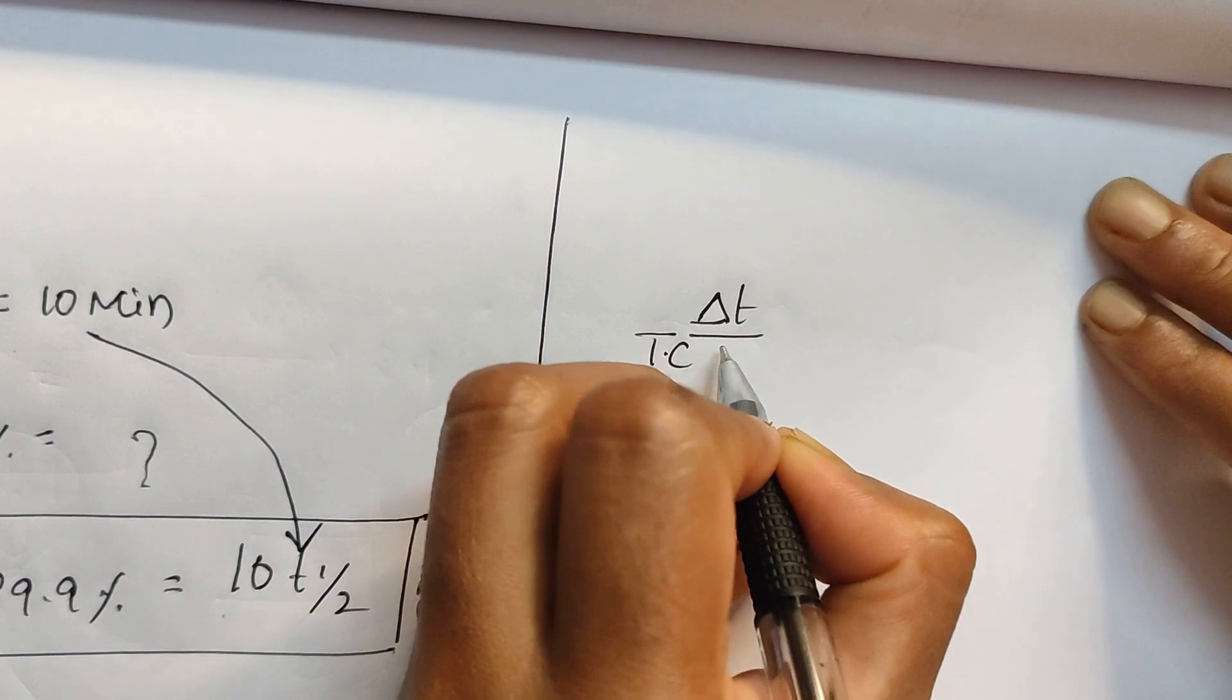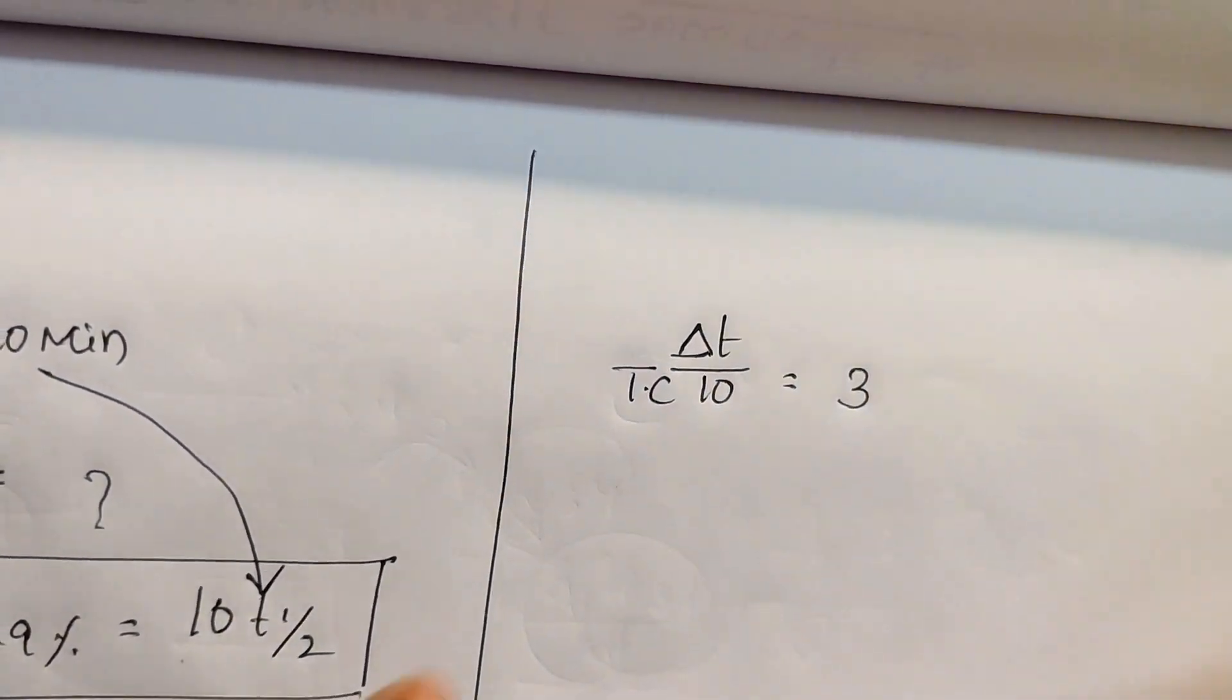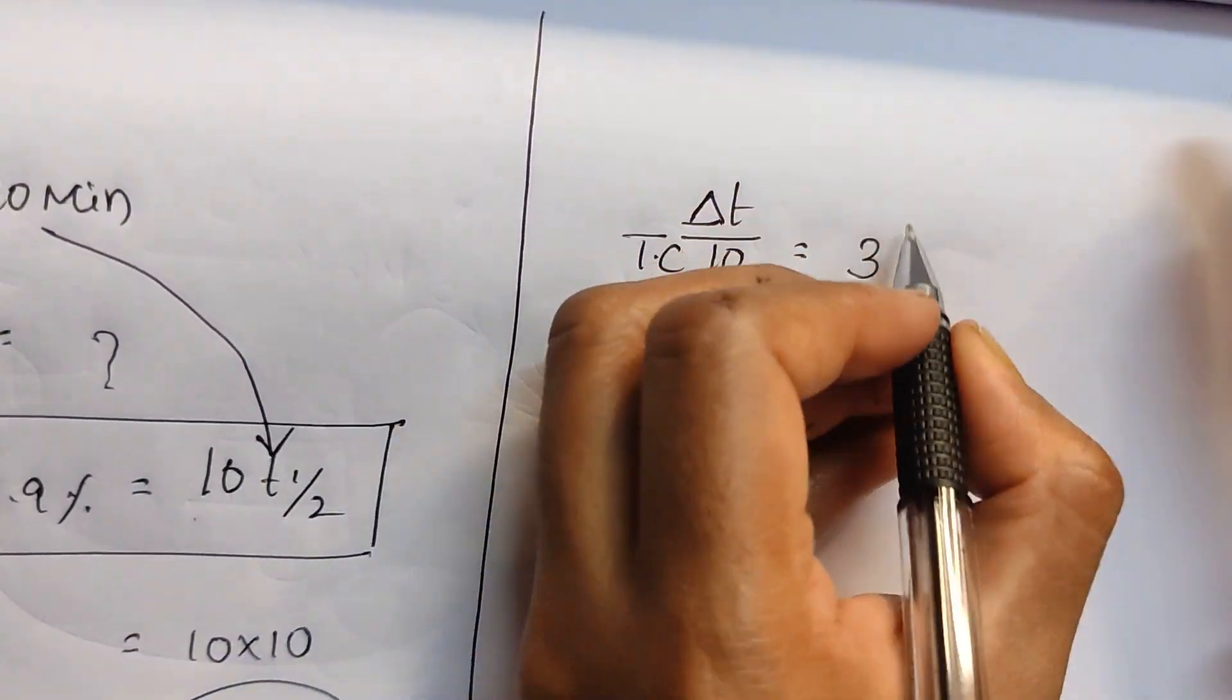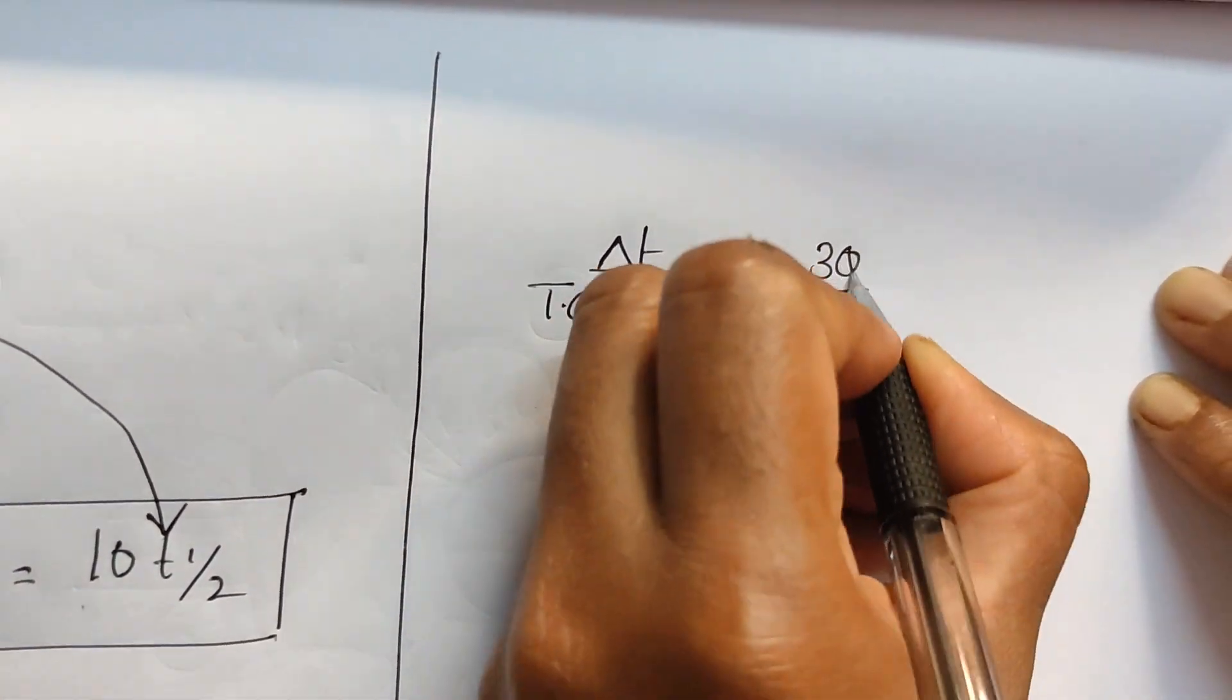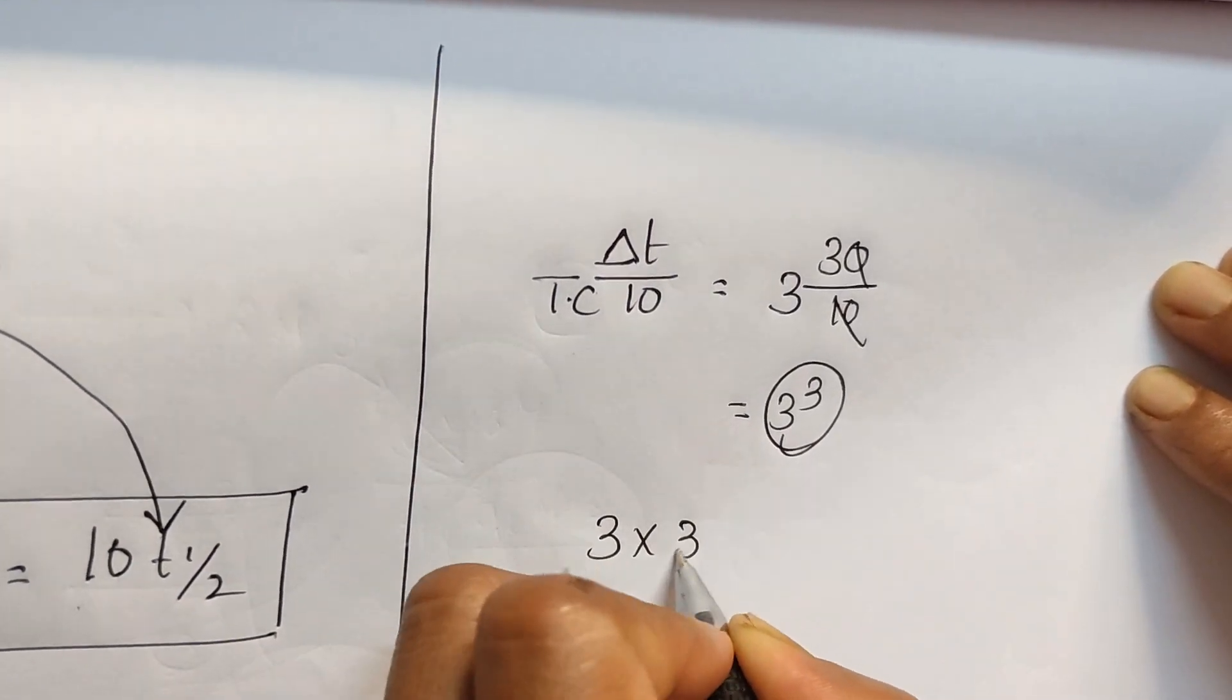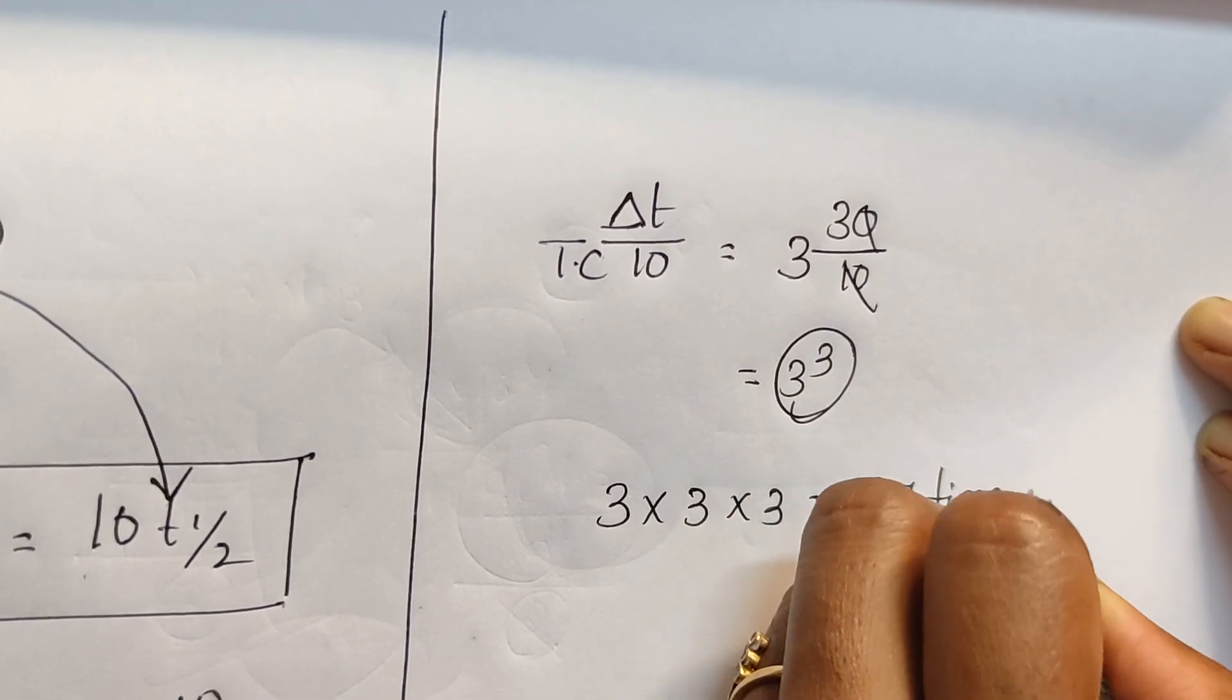What is the formula? Temperature coefficient is equal to delta t by 10. Temperature coefficient is 3 and temperature changed from 25 to 55, so what is the difference? 30. 55 minus 25 is 30 divided by 10. So here 3 to the power of 3. Then 3 times 3 is 9, 9 times 3 is 27. Total 27 times the new rate will be increased as that of the initial rate. So option number 1 is the correct answer.